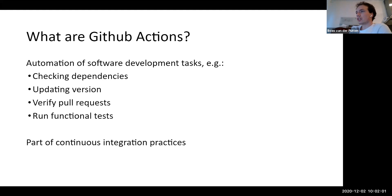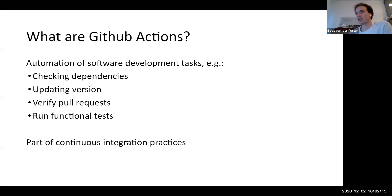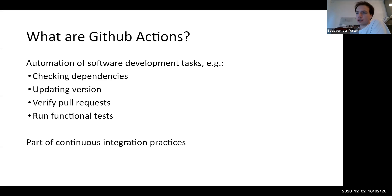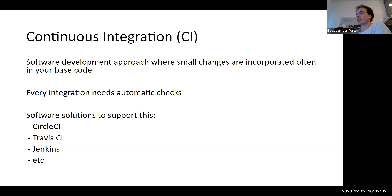GitHub Actions are used to automate several software development tasks. This is not different from most other tools that do stuff like this, like Travis or CircleCI. For example: checking dependencies, updating versions, verifying pull requests, running functional tests to see if particular test data gives the right output — all part of continuous integration. Continuous integration, often referred to as CI, is a software development approach where you incorporate very small changes into your codebase very often.